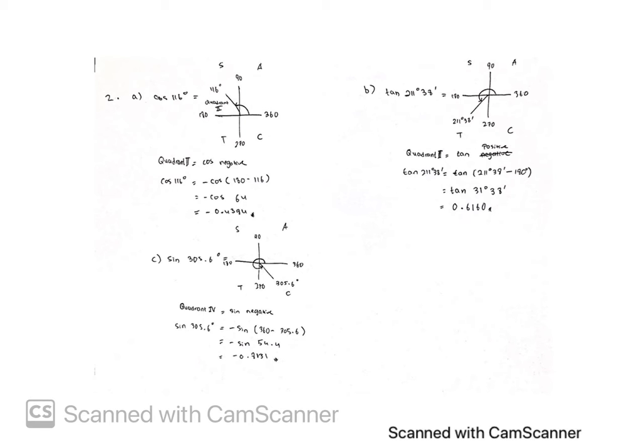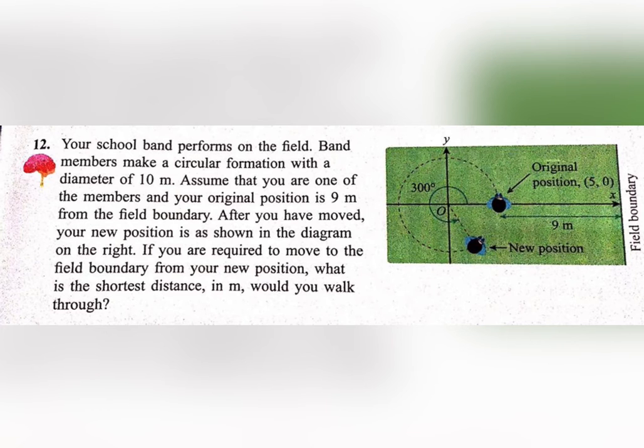Question C gave us sin 305.6 degree. So we must put the negative sign in front of the sin. After that, you have to minus 360 with the 305.6 degree, and you will get negative sin 54.4. So the final answer will be negative 0.8131.